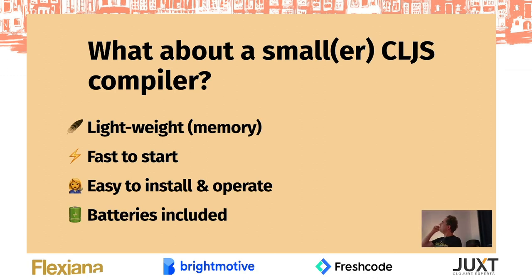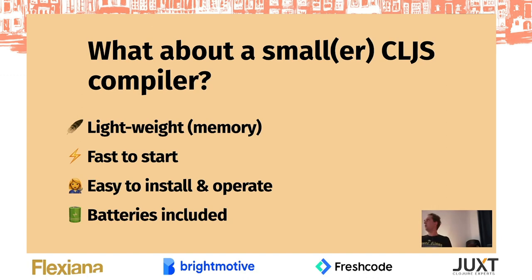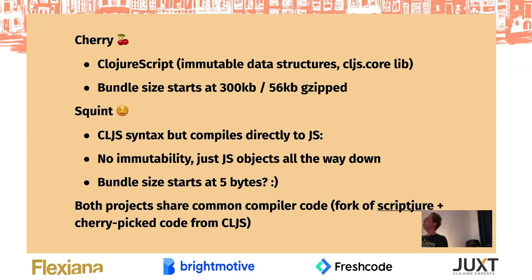What about a smaller ClojureScript compiler? Can we have similar convenience by making a small compiler instead of an interpreter? There are pros and cons to an interpreter. One pro is that you don't have to emit files to your file system. One downside is you always have to bring the interpreter with you to execute the program, and compiled programs are generally more optimizable. So what if we can make something lightweight, fast to start, easy to install, and somewhat batteries-included? Two relatively new projects fit that description.